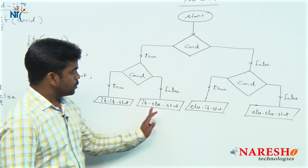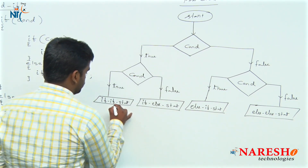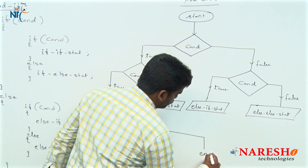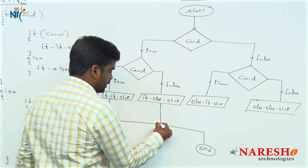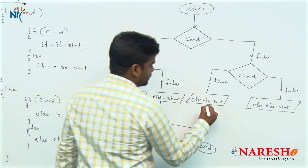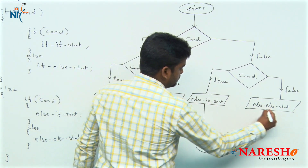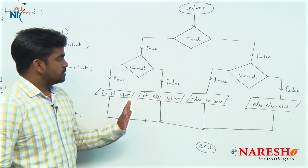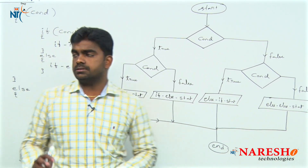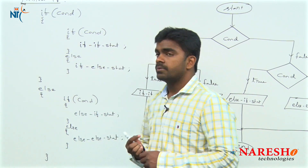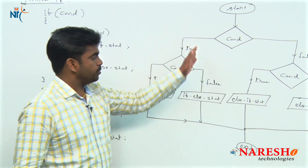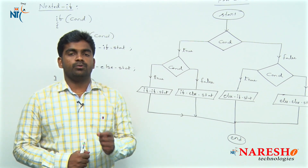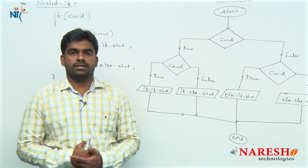Only one block executes among all of these. Finally, control moves to end. This is the flowchart, the syntax of nested if block, and the execution flow of a nested if block. Hope you understood. For more videos please subscribe to the Nourish Technologies channel. Thank you.